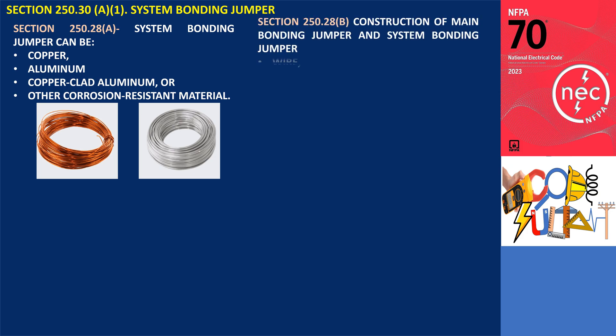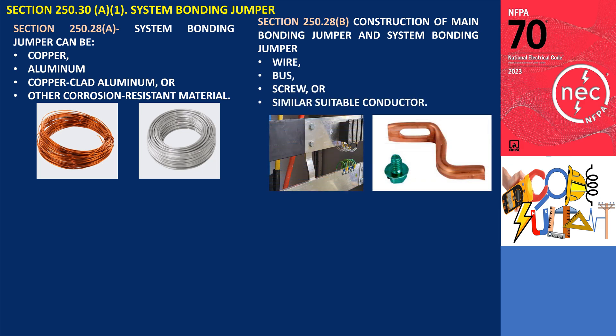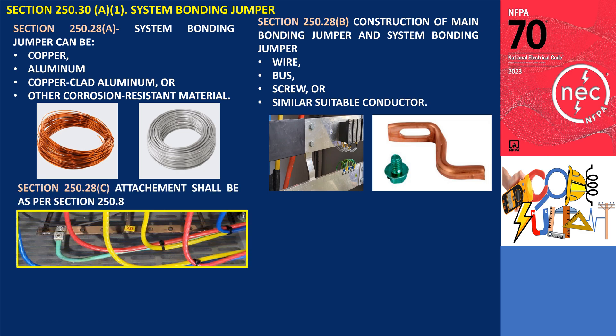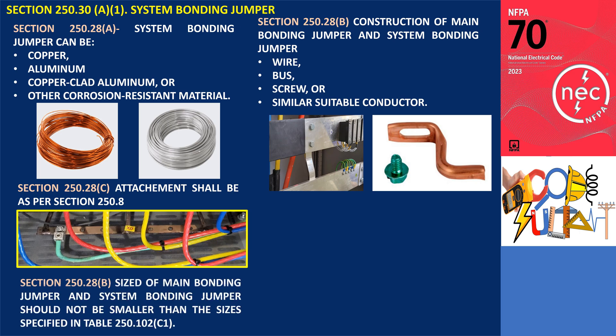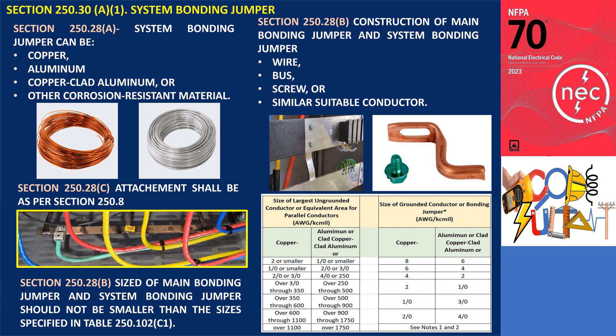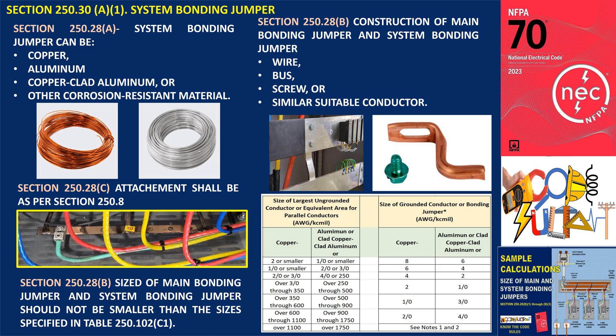The system bonding jumper construction can be in the form of a wire, bus, screw, or similar conductor, and the connection to the system bonding shall be made using the methods specified in section 250.8, such as terminal lugs or bars. The size of the system bonding conductor is selected from table 250.102.C.1, as specified in section 250.28 D. For sample sizing and calculation, you can refer to the previous video.